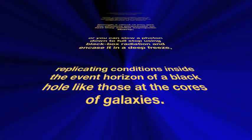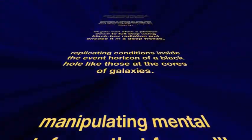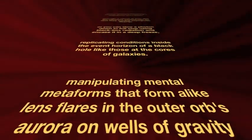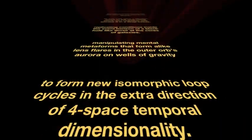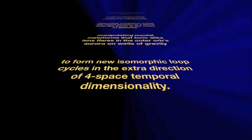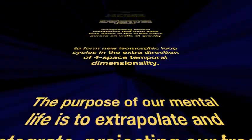Replicating conditions inside the event horizon of a black hole like those at the cores of galaxies, manipulating mental meta-forms that form light lens flares in the outer orbs aurora on wells of gravity, to form new isomorphic loop cycles in the extra direction of force-based temporal dimensionality.